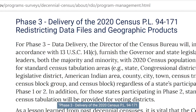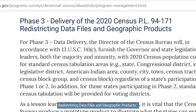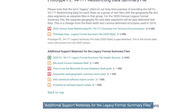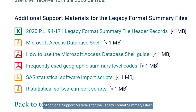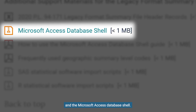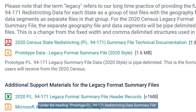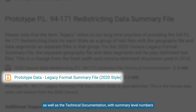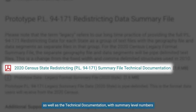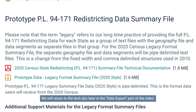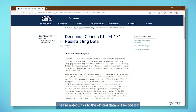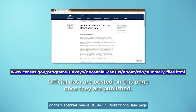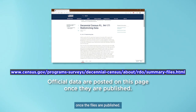Then scroll down to the section Phase 3 Delivery of the 2020 Census PL 94-171 Redistricting Data Files and Geographic Products. Under the heading Additional Support Materials for the legacy format summary files are the links to download the PDF guide and the Microsoft Access database shell. Under the heading Prototype PL 94-171 Redistricting Data Summary File are the links to download the prototype data, as well as the technical documentation with summary level numbers for geographies and codes for population and housing data. We will return to the TechDoc later in the data export part of the video. Please note, links to the official data will be posted on the Decennial Census PL 94-171 Redistricting Data page once the files are published.